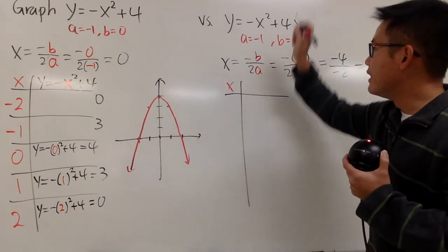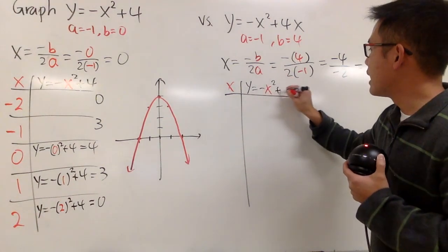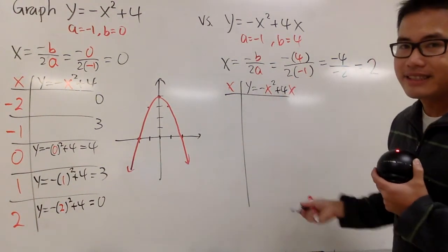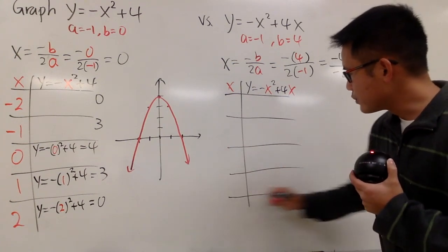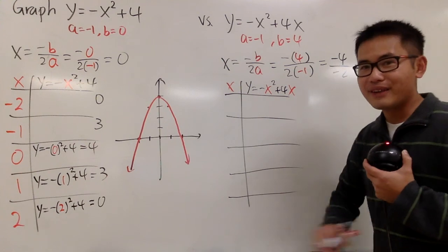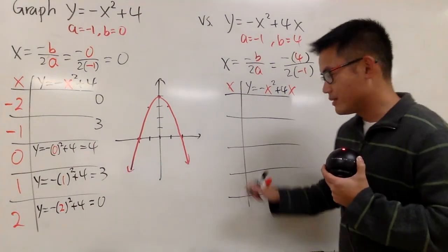I have the x values. And the y values are negative x squared plus 4x like this. And now, let's see, 1, 2, 3, let's do one more, right? 1, 2, 3, 4, 5. We are going to put down 2 right in the middle, right here.